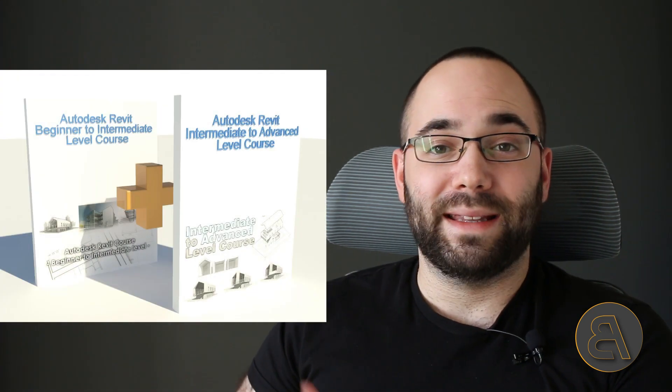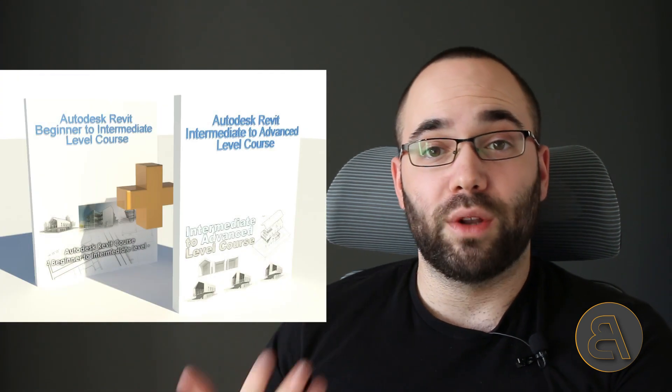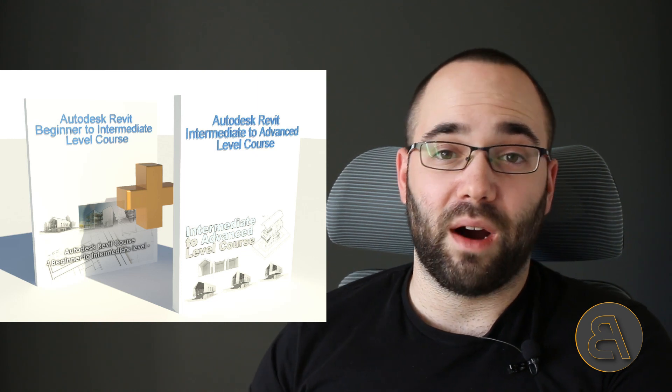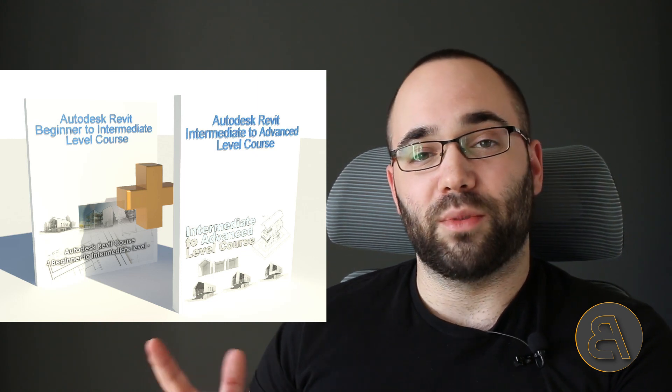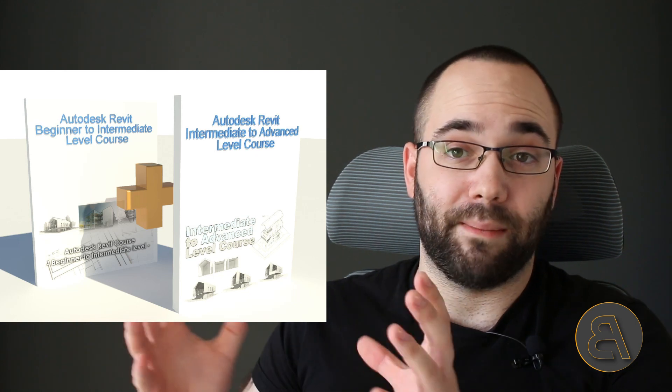If you're just beginning and want to get the beginner to intermediate level course first and then move on to intermediate to advanced level, you can get both courses as a bundle. Until the end of this week I'm offering 20% off on both courses, so if you get them together you save about $40. It's a really good deal, so if you're interested check that out.